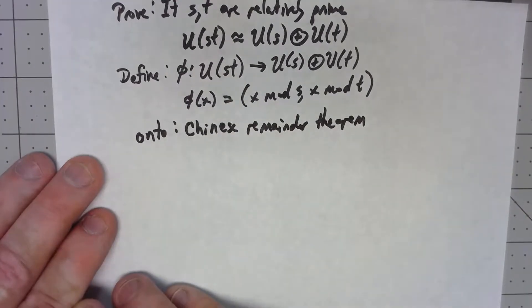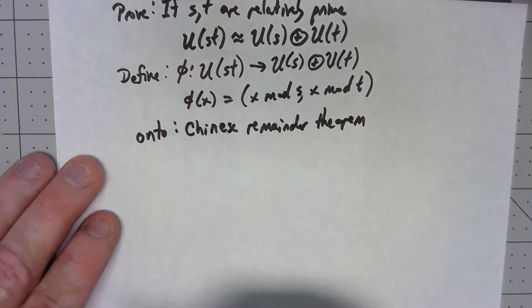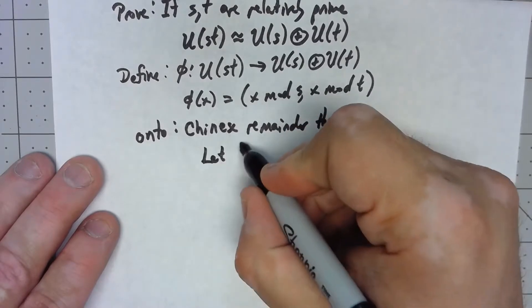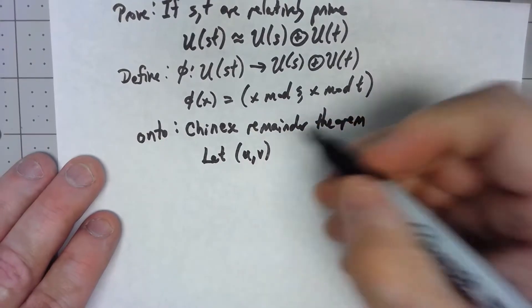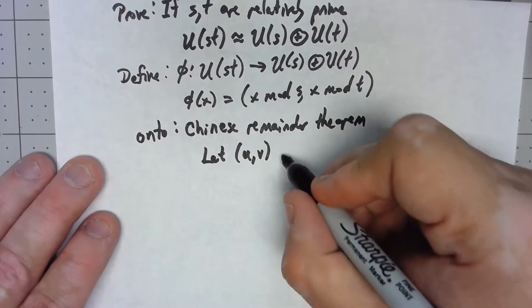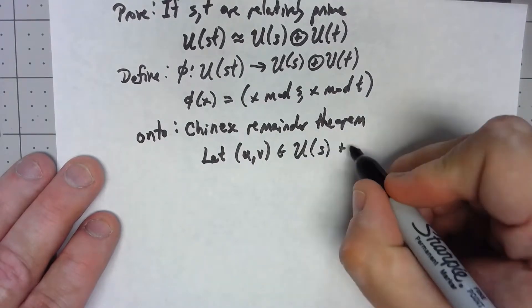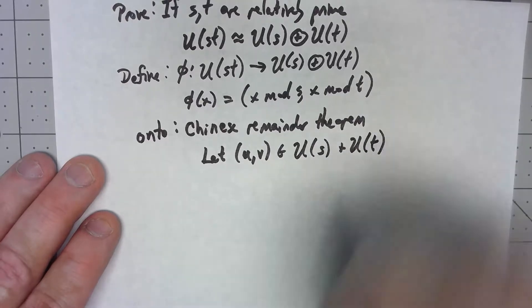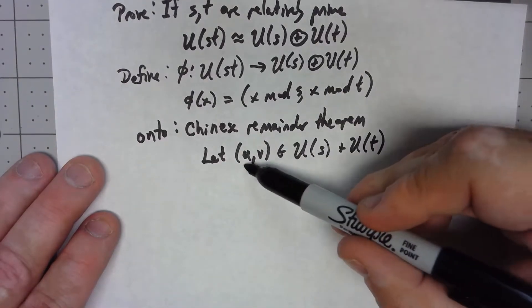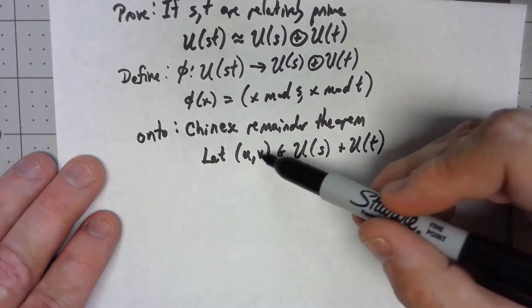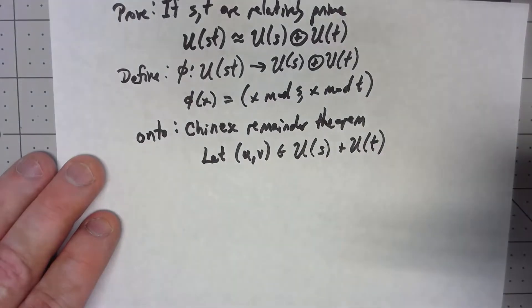And what the Chinese remainder theorem says in this case is, to show this is onto, we want to let (u, v) be in U(s) × U(t). So specifically u is going to be relatively prime to s, v is going to be relatively prime to t.